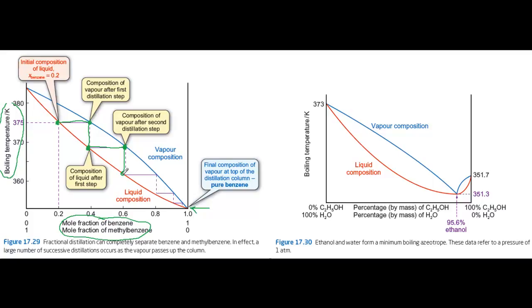And I think you can predict where this is all going, because you could now condense that vapour and boil it again, and condense it and boil it again, and gradually the vapour gets richer and richer in benzene, until eventually you would end up with a distillate that was pure benzene. And what's left behind is a residue that's pure methylbenzene.